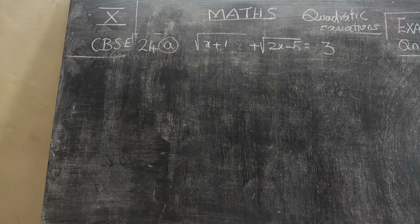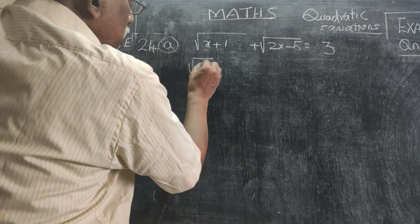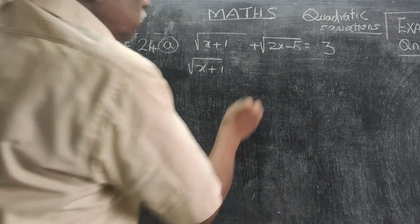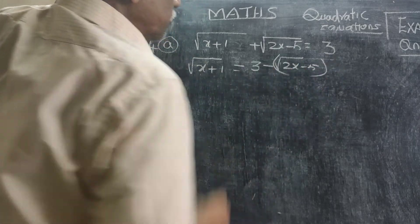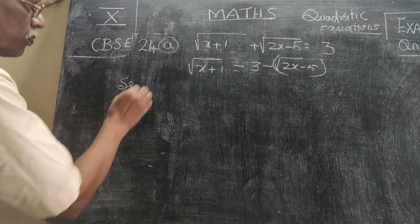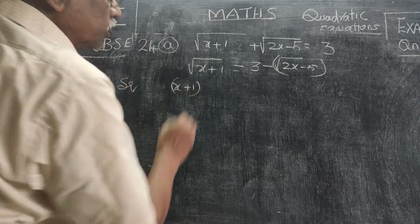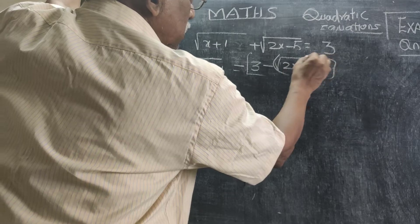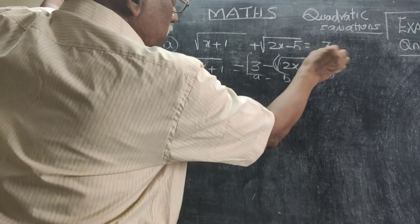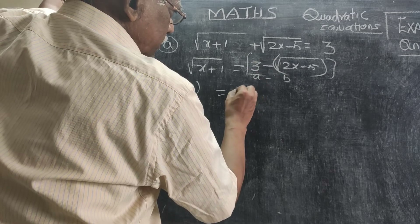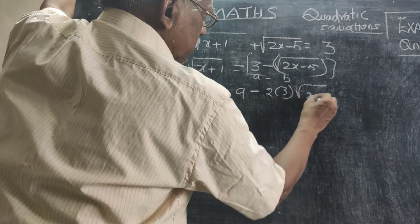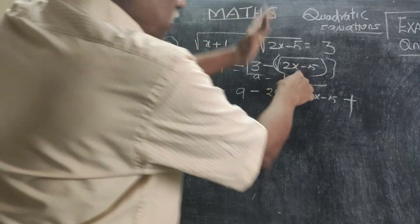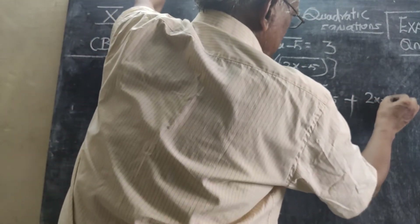Now the last problem for the day: √(x+1) + √(2x+5) = 3. Keep one root on one side: √(x+1) = 3 − √(2x+5). Squaring both sides, where a = 3 and b = √(2x+5): a² minus 2ab plus b² gives 9 minus 6√(2x+5) plus 2x+5.